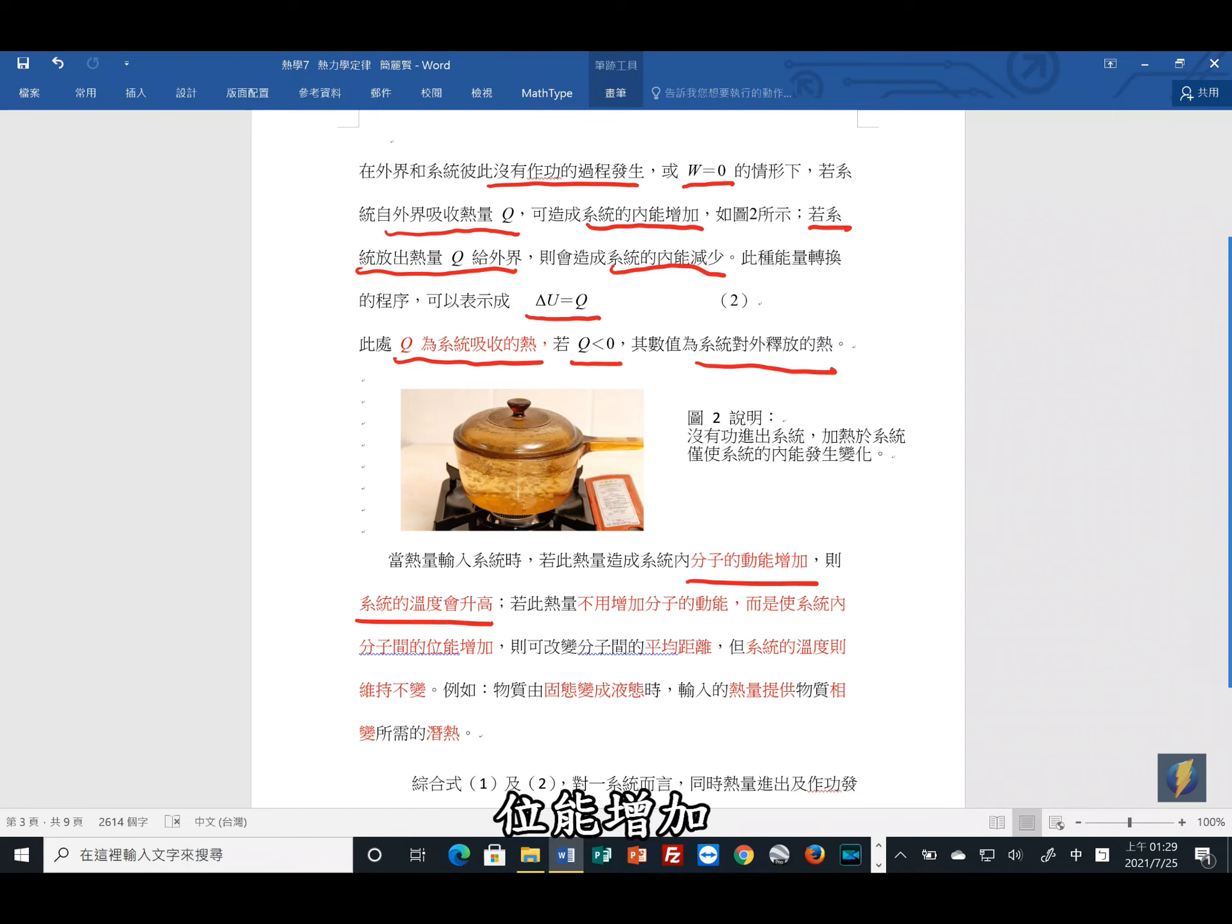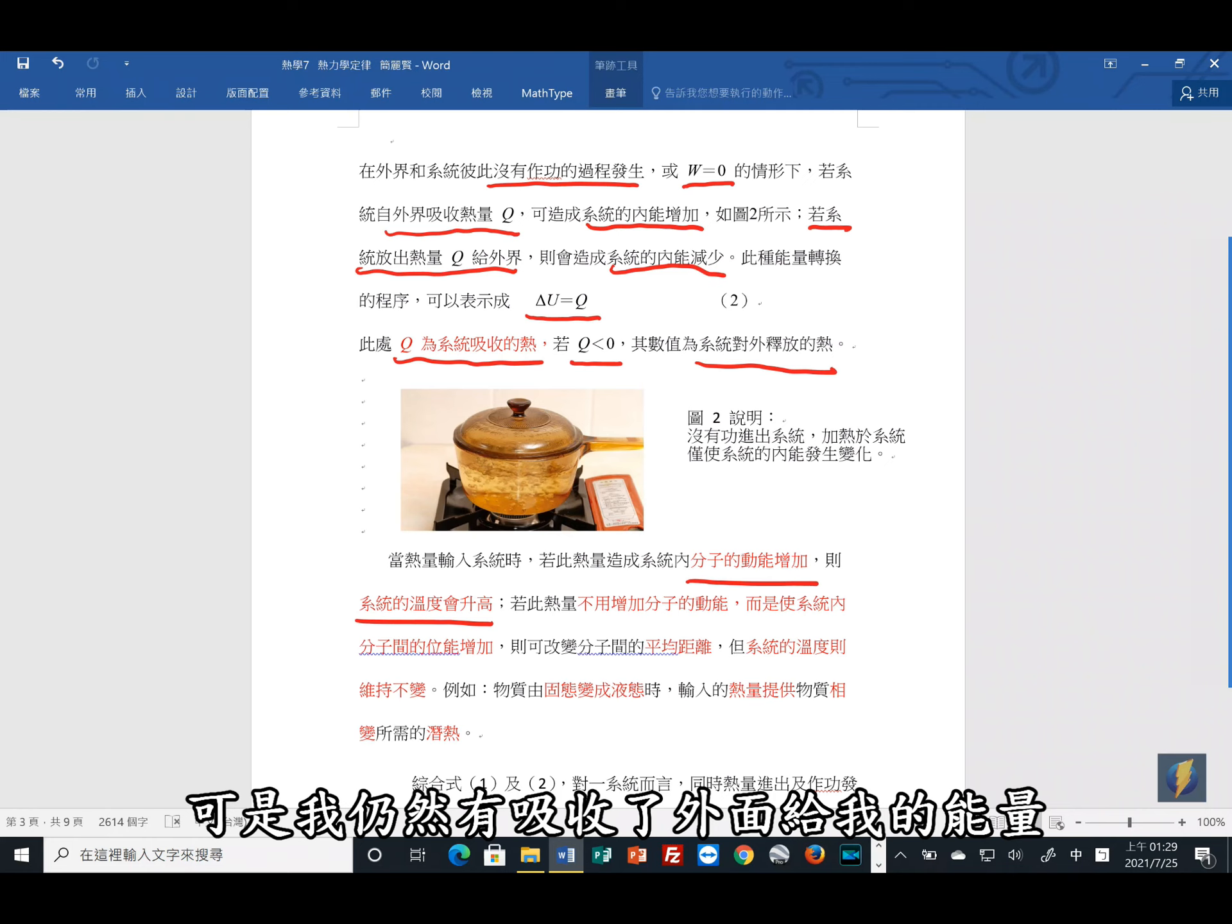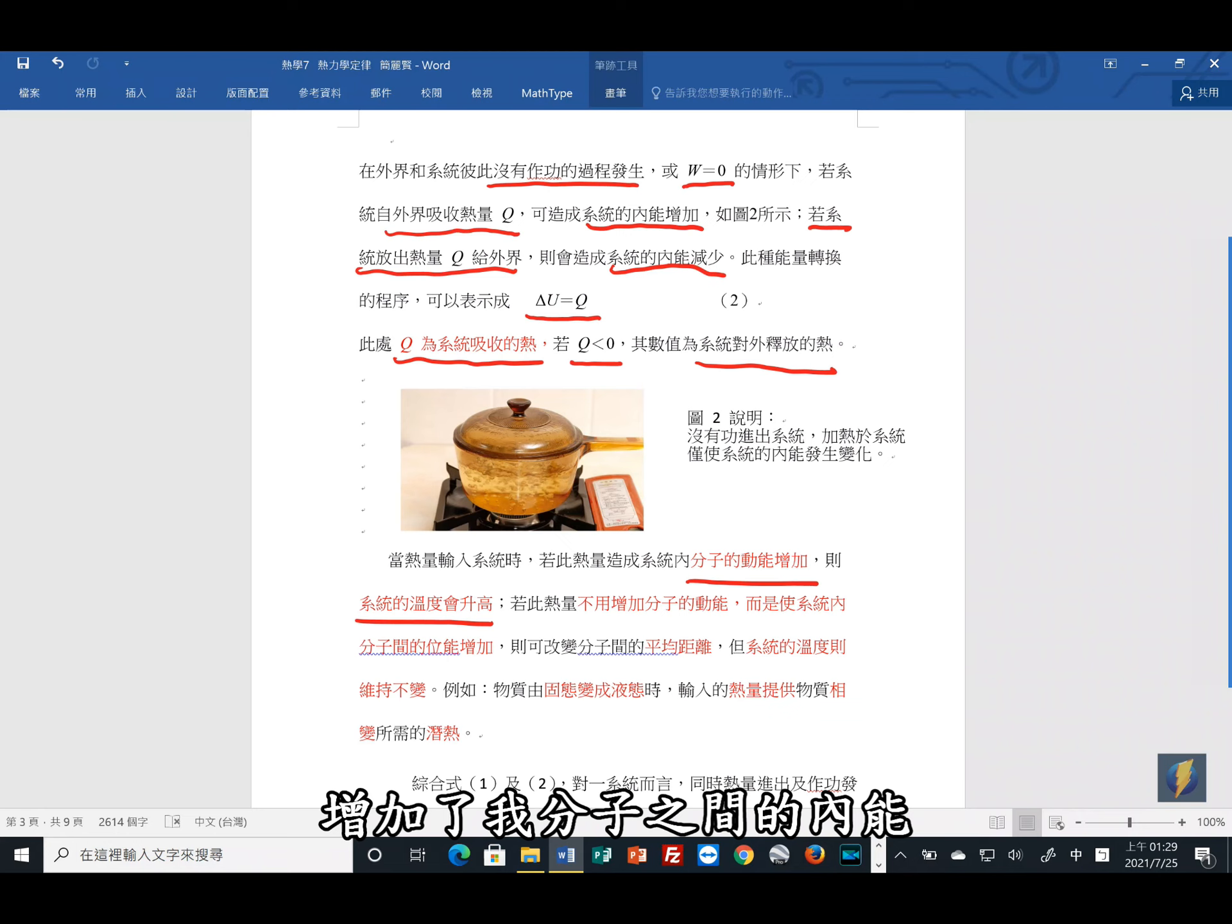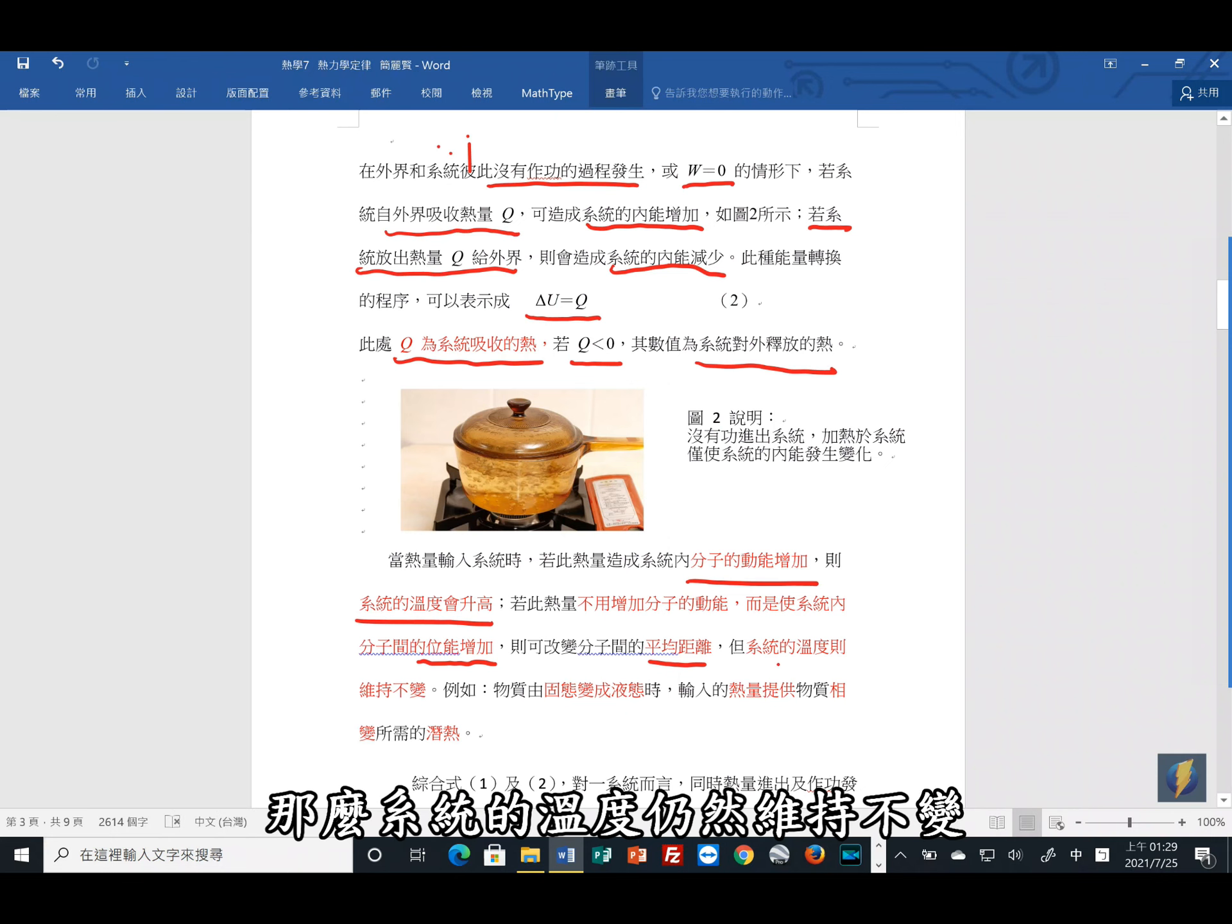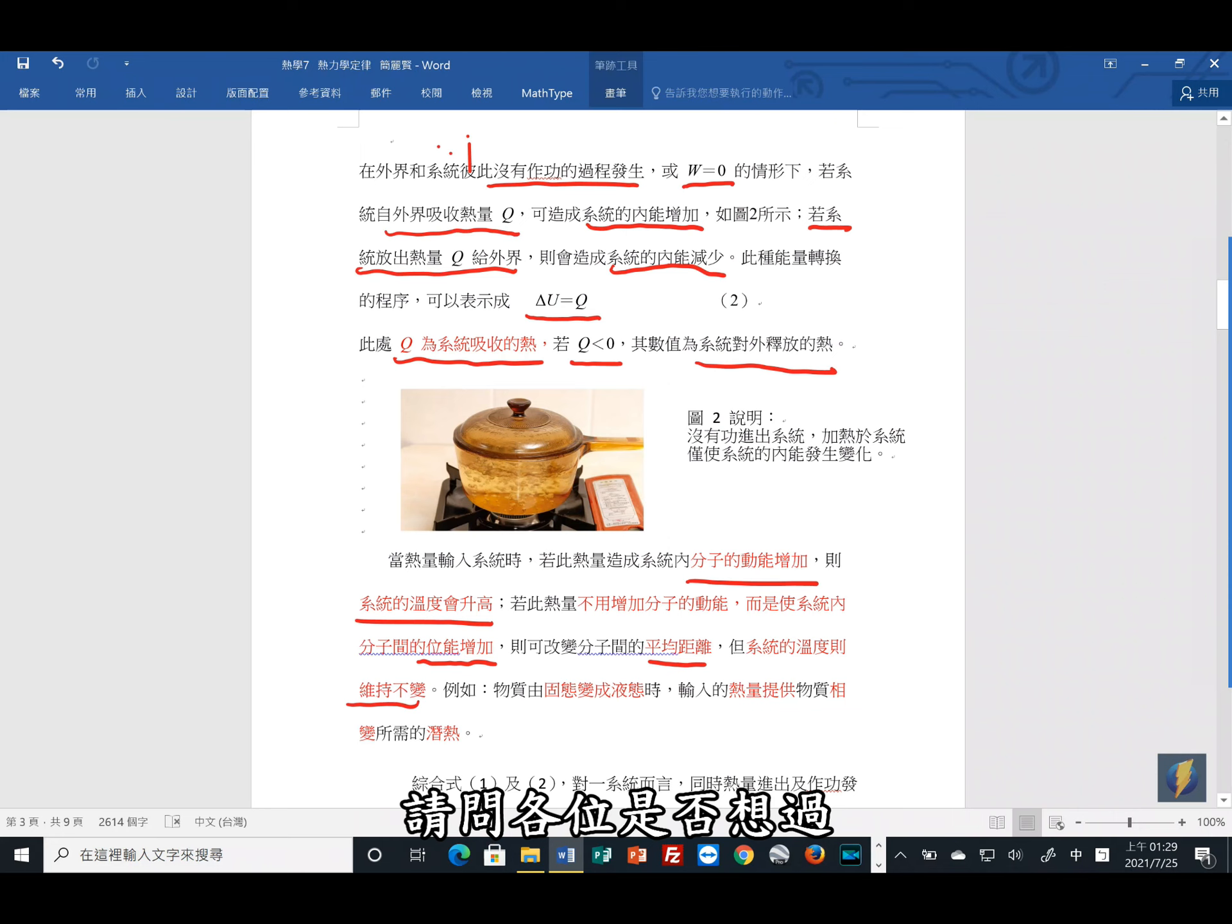如果这个热量并不是用来增加分子的动能呢?这当然是有可能的。这个时候,系统内部的位能就会增加。那系统的位能增加,那前面讲过的动能没有增加,所以温度没有升高。可是我仍然有吸收了外面给我的能量,增加了我分子之间的内能。这个时候,这分子之间的内能,是使得分子之间的位能增加了。所以当我让位能增加的,位能增加就可以改变分子的平均距离。那么系统的温度仍然维持不变。请问各位是否想过?